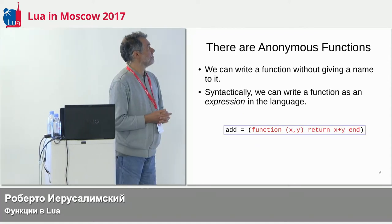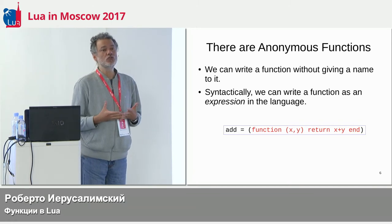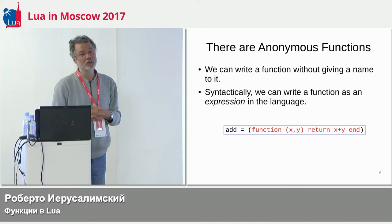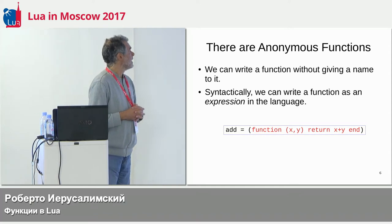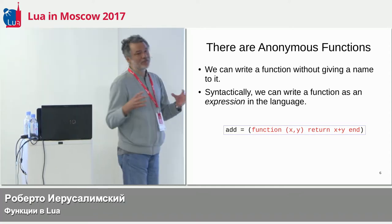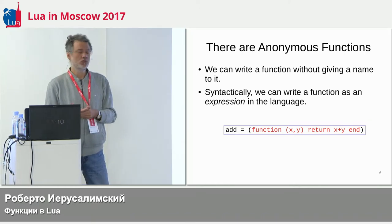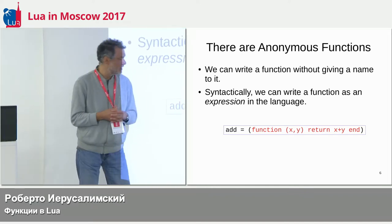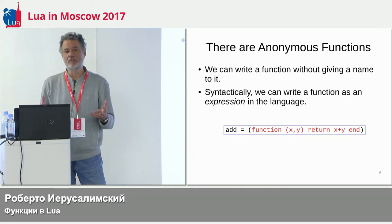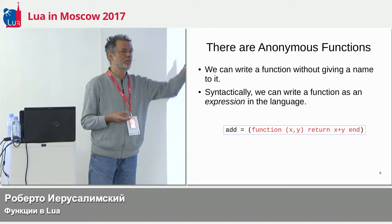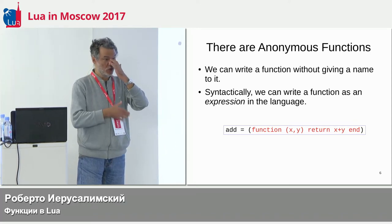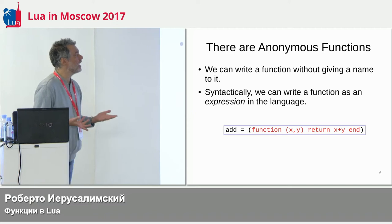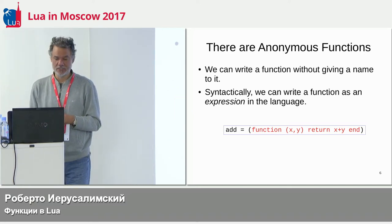The third important property is that the language allows you to write what is called anonymous functions — as the name says, functions that don't have a name. Syntactically, that means we can write a function as an expression in your language. For instance, what is shown in red is an anonymous function — I just write the function where I need it. I don't need to pre-declare the function somewhere else or give it a name. I just write it exactly where I want that function.